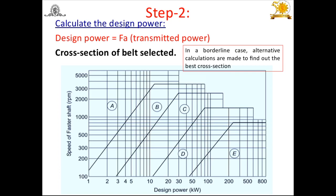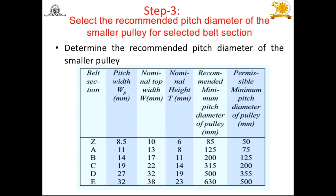Using the design power on the X-axis and the speed of the faster shaft, we can locate the cross-section of the belt from the chart. For example, if design power is 10 kW and speed is 200 RPM, the point falls in the region of section C. In this way we locate the cross-section among A, B, C, D, and E.